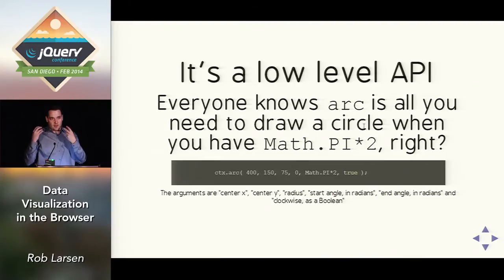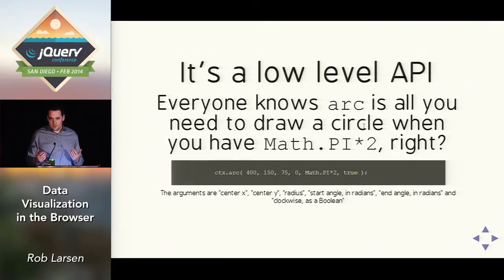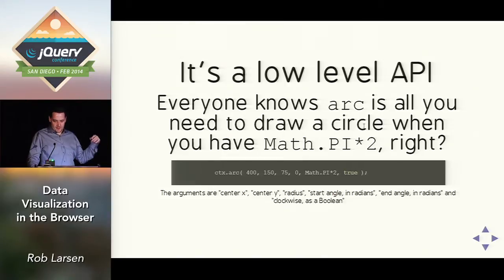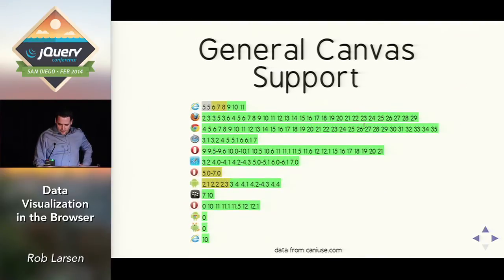Arc is all you need when you have Math.PI times two, right? You would think there might be a 'circle' method — well, there's not. So a lot of this you have to do yourself. The cool thing is you have access to the low-level stuff without a lot getting in the way, but the bad news is there aren't many conveniences. The arguments are center X, center Y, radius, start angle in radians — show of hands, anybody know what a radian is? — and clockwise as a boolean.